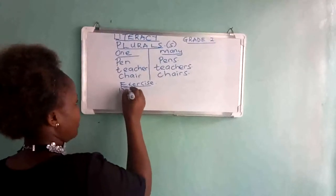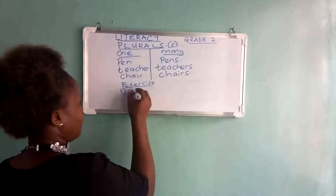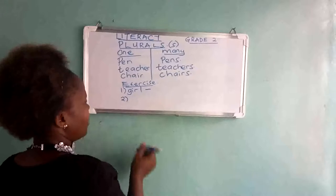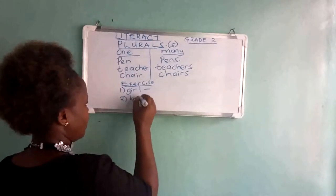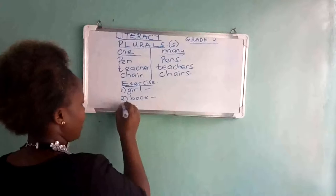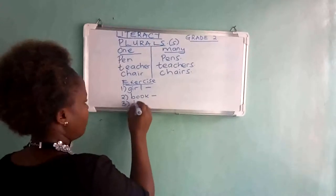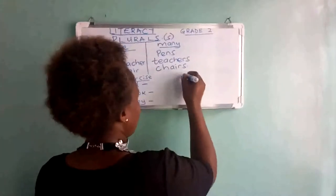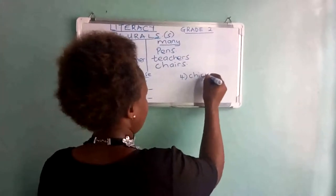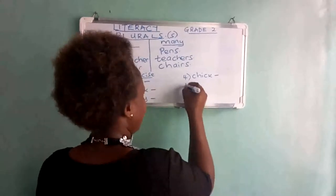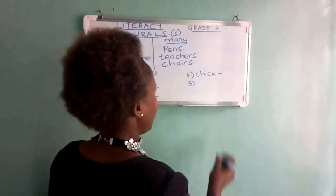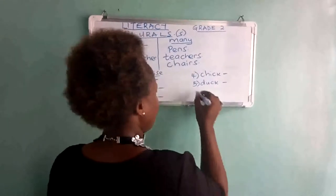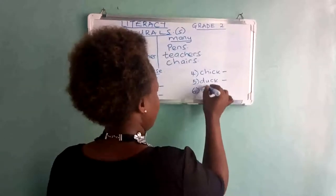Number one, we have girl — tell me the plural of girl. Number two, we have book. Number three, we have boy. Number four, we have chick. Number five, we have duck. Number six, we have dog.